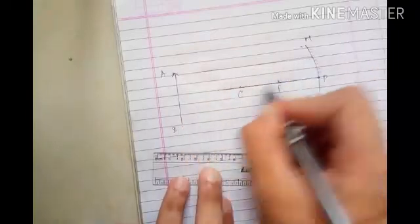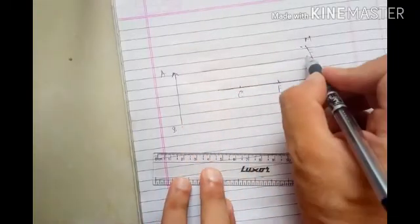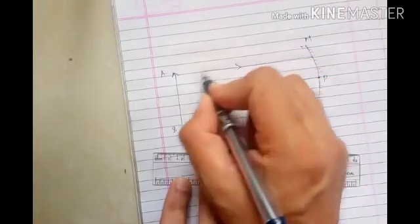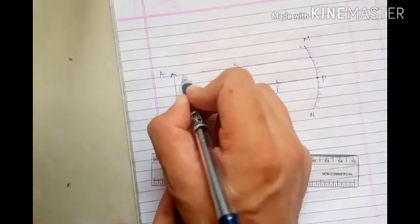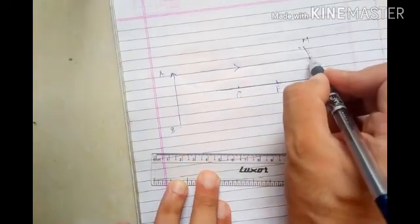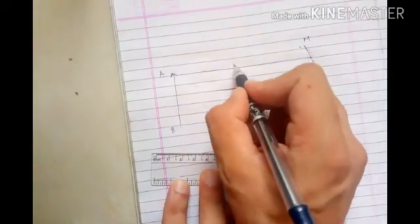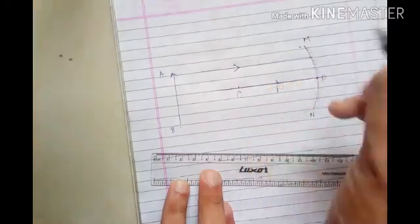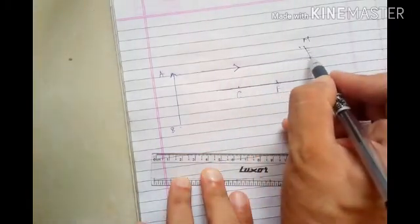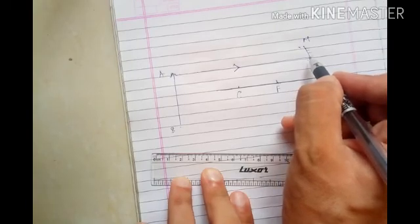This ray is parallel to the principal axis. This arrow is very important - this is the incident ray. From this object which is at infinity, this ray is coming and hitting the reflecting surface. This incident ray is parallel to the principal axis, so a ray parallel to the principal axis after reflection passes through...